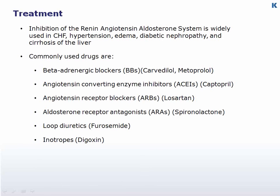Pharmacological inhibition of the actions of the renin-angiotensin-aldosterone system is widely used, not only in the treatment of patients with CHF, but also of those with hypertension, pulmonary and systemic edema, diabetic nephropathy, and cirrhosis of the liver. The drugs used are beta blockers, specifically carvedilol and metoprolol, angiotensin-converting enzyme inhibitors or ACE inhibitors, such as captopril and enalapril, angiotensin receptor blockers or ARBs, such as losartan, aldosterone receptor antagonists, such as spironolactone, loop diuretics, such as furosemide, and inotropes, such as digoxin.